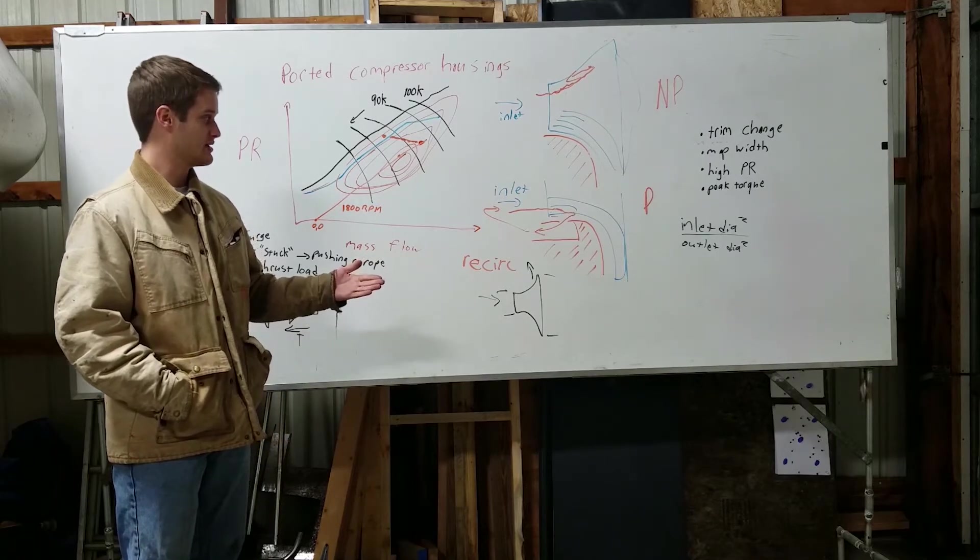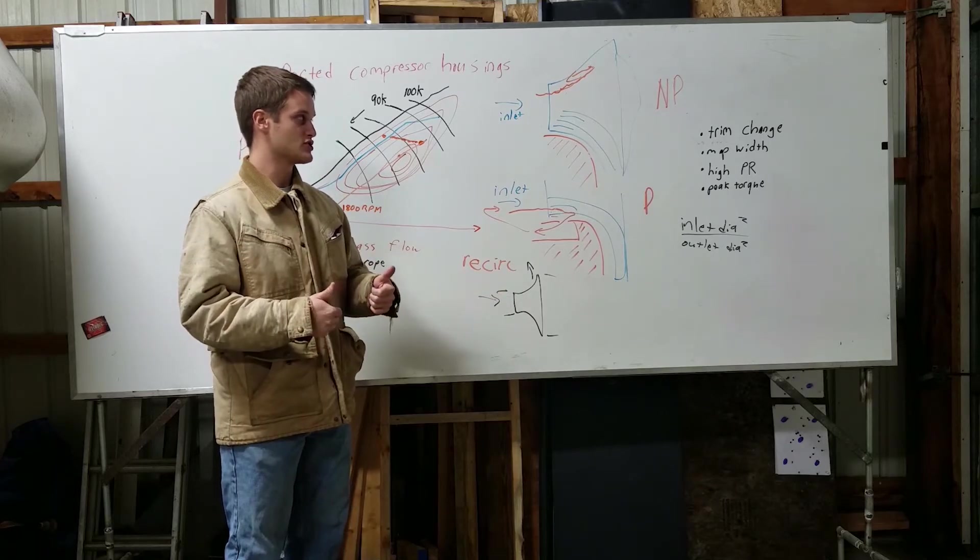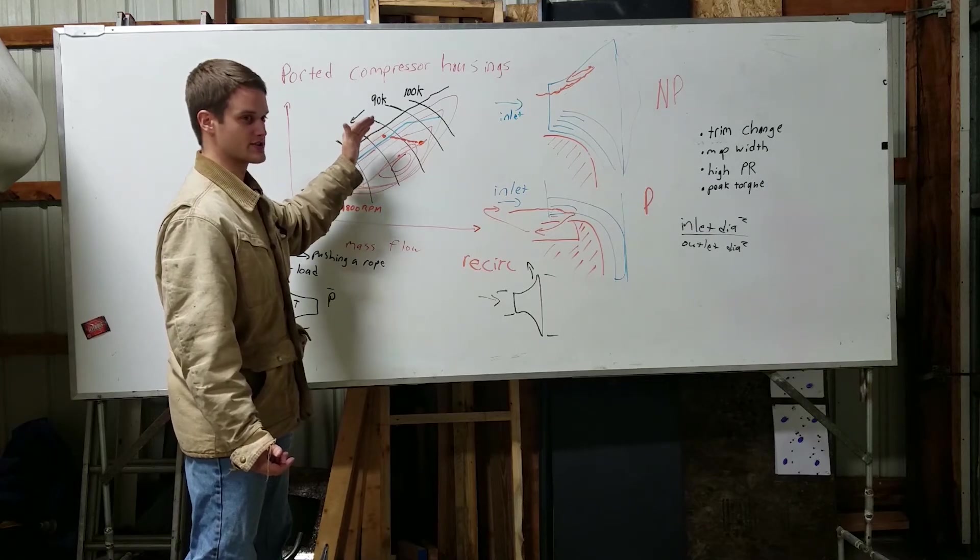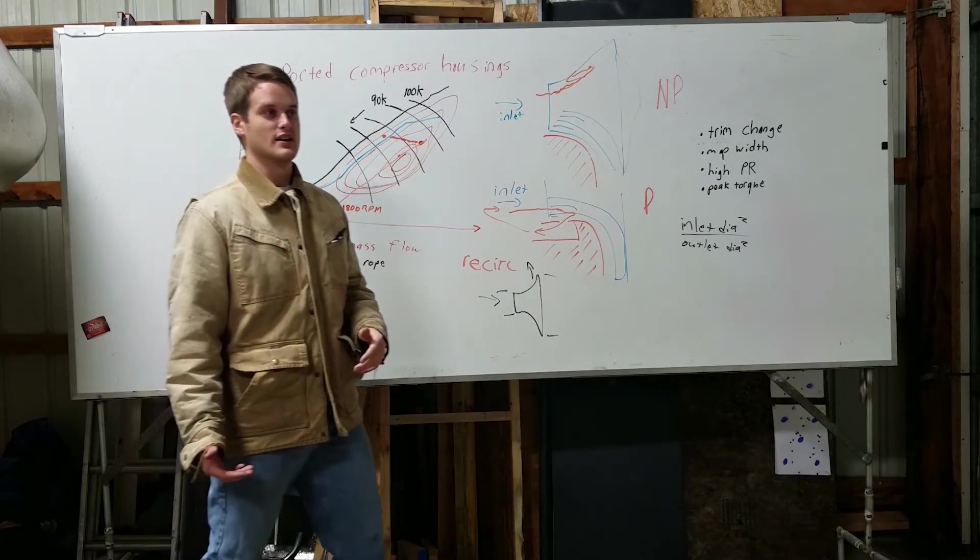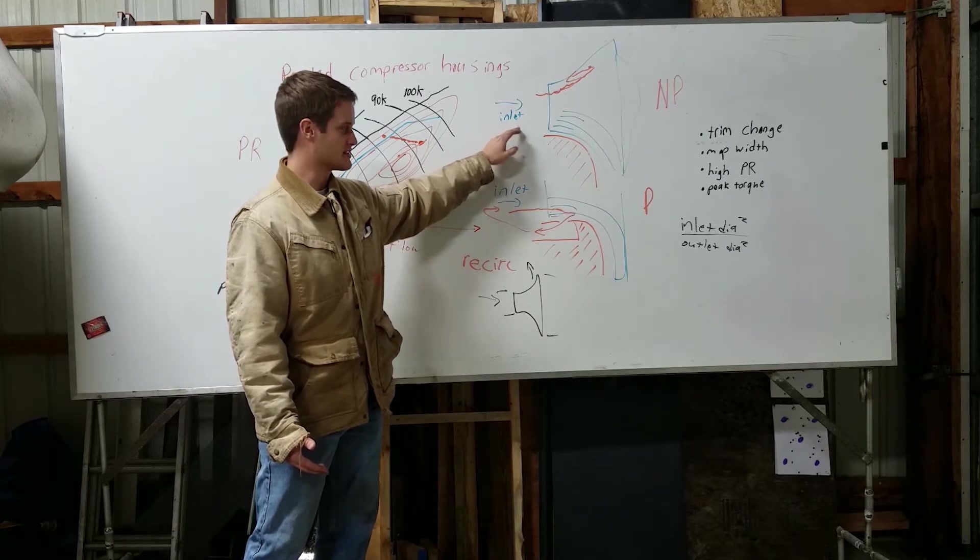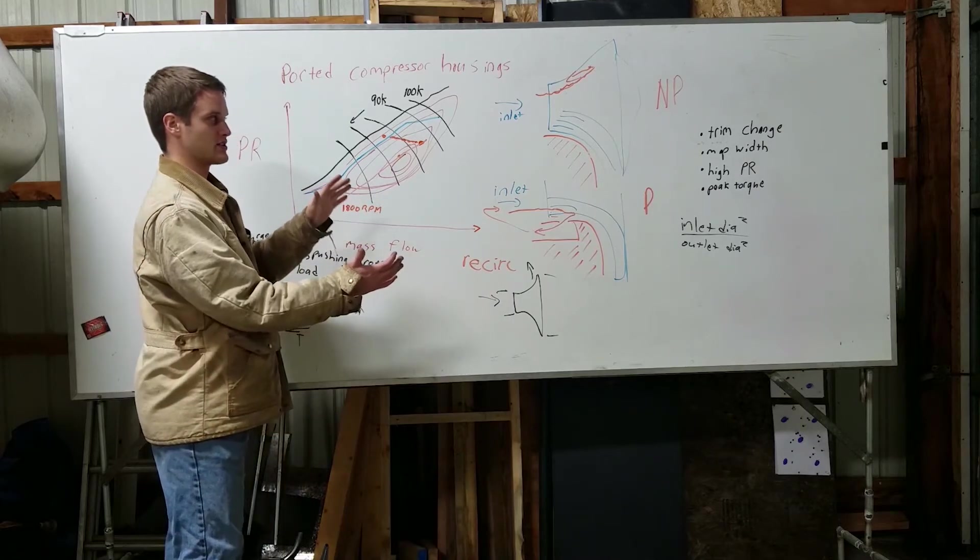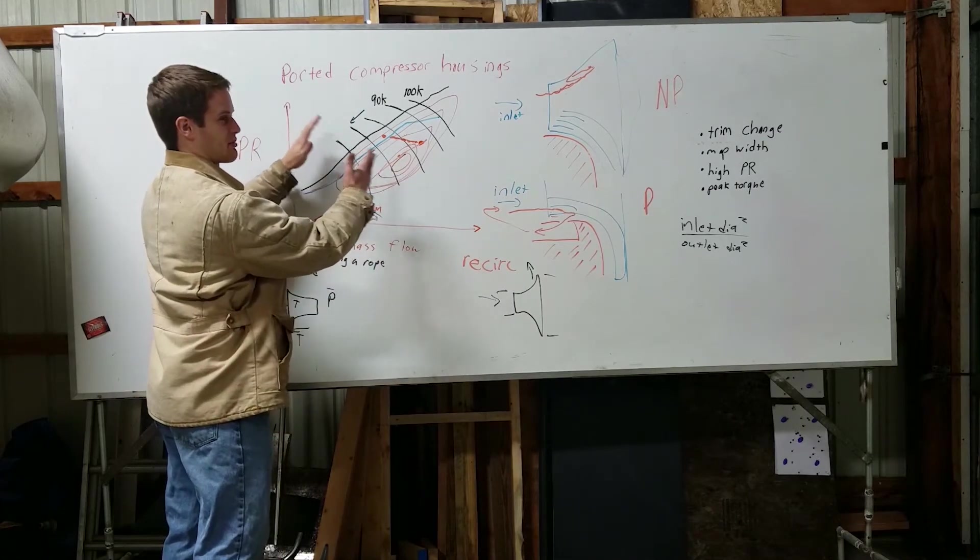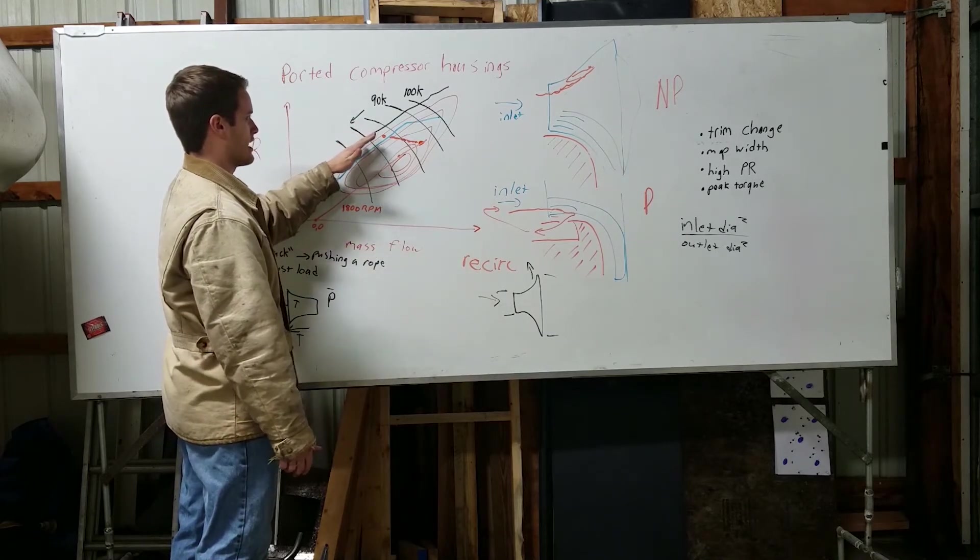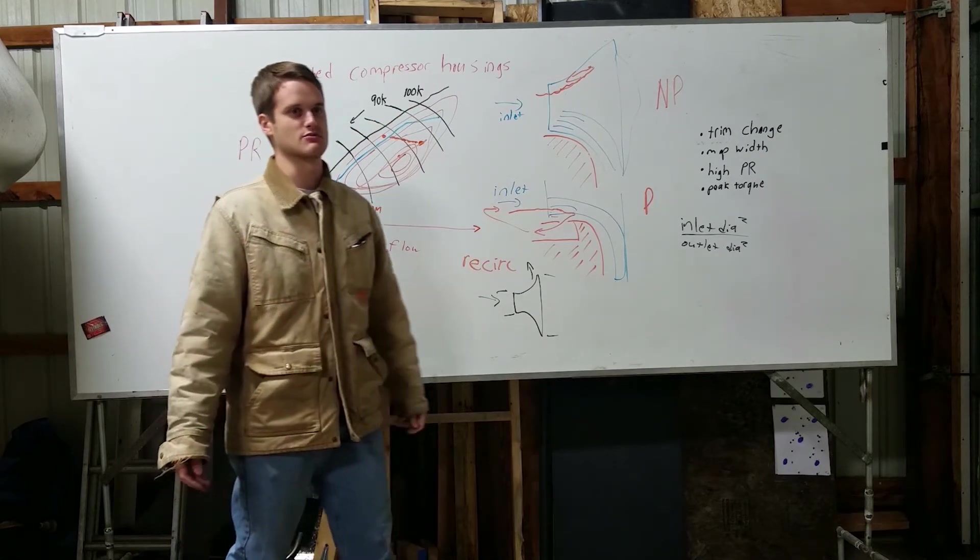This also works the other way around. So let's say we go up in inlet diameter. We go up in trim. This will move it to the right. You'll get more flow, but also will move the surge line to the right. So this does not actually eliminate the ported housings, or non-ported housings. It also applies to ported housings. So we can do that. We can customize our trim, move our map around, and we can get the benefits of a recirc or a ported cover, in that we get our instant benefit of increased surge margin.